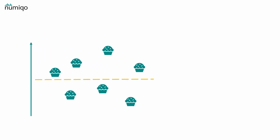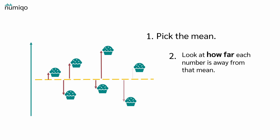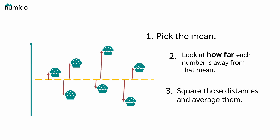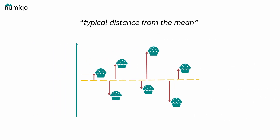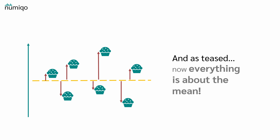To calculate this, we pick the mean, look at how far each number is away from that mean, square those distances, and average them. By taking the square root, we turn the variance into the standard deviation. So to sum it up, the standard deviation is something like the typical distance from the mean. And as teased, now everything is about the mean.